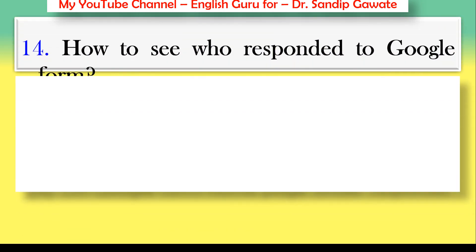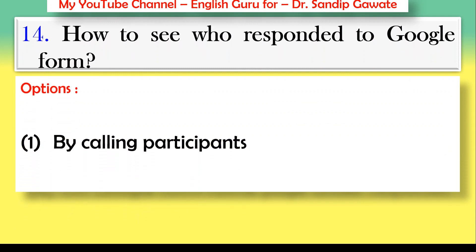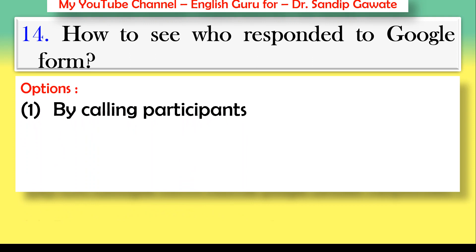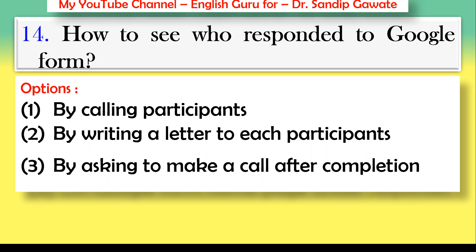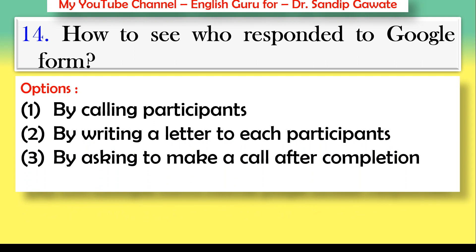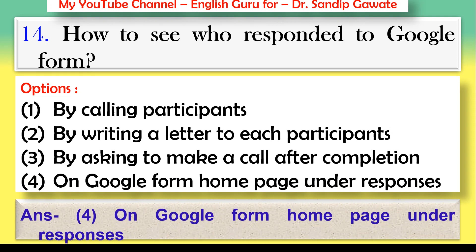Question 14: How do you see who responded to a Google Form? Options: by calling participants, by writing a letter to each participant, by asking them to make a call, or on the Google Form home page under Responses. The correct answer is — on the Google Form home page under Responses.